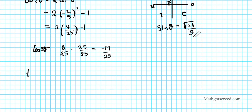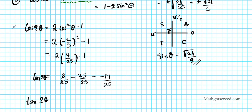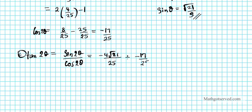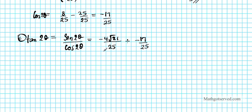The last one is tan 2θ. I'll use the quotient identity: tan 2θ equals sine 2θ over cosine 2θ. So we write this as negative 4 root 21 over 25 divided by negative 17 over 25. Using keep-change-flip, we multiply negative 4 root 21 over 25 by the reciprocal, negative 25 over 17. The 25s divide out, giving tan 2θ equals negative 4 root 21 over 17.